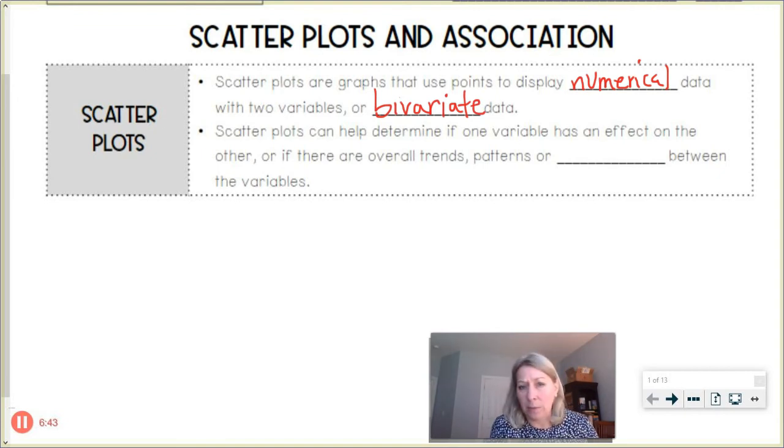Bivariate means two, variate think variable. What do scatter plots do? They can help us determine if one variable has an effect on the other or if there's any overall trends or patterns or association between the variables. Are they really connected to one another or associated with one another? So looking for trends, patterns or association between the two variables.